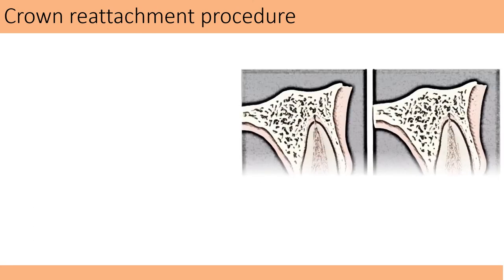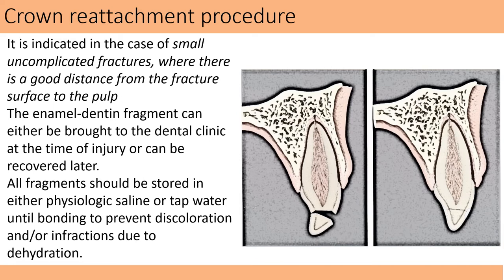I would like to explain the crown reattachment procedure. The best cases for this are small uncomplicated fractures where there is a good distance from the fracture site and the pulp. The fragment may be recovered and brought to the clinic at the time of injury or recovered later. When you receive it, place it in saline or tap water to prevent its discoloration or development of any infractions due to dehydration. Once we have the fracture fragment placed in saline, we take the inner surface of the fragment and etch it with orthophosphoric acid for 10 seconds. Then wash it, apply a layer of bonding agent, and cure it. Then on the fractured tooth surface, etch it for 10 seconds, dry it, apply a layer of bonding agent, and cure it.